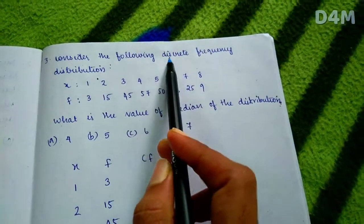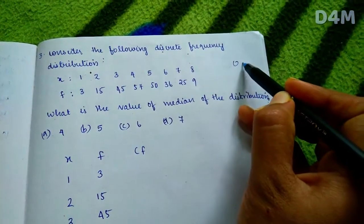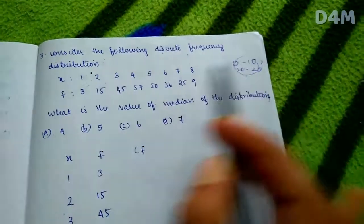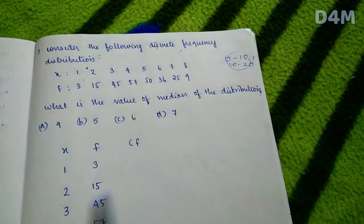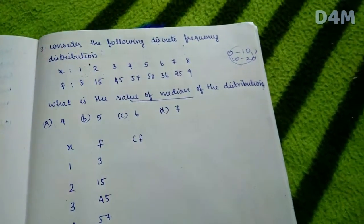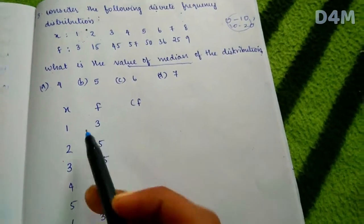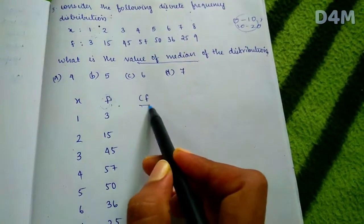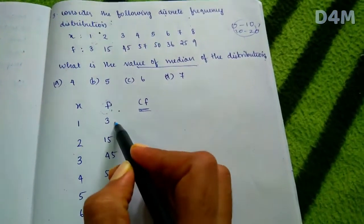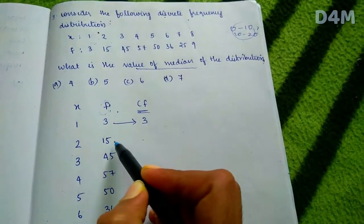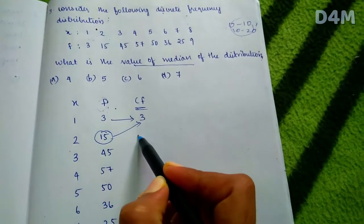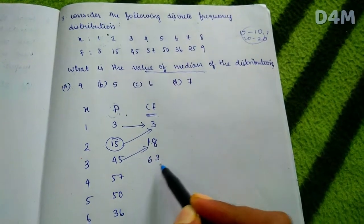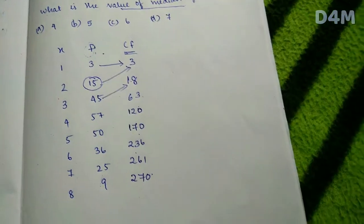Next question: Consider the following discrete frequency distribution. We need to find the value of the median. We set up the x and f columns and compute the cumulative frequency. The first cumulative frequency is 3; then 15 plus 3 gives 18; then 18 plus 45 gives 63.